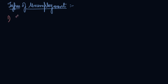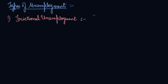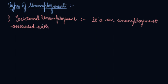Number one is Frictional Unemployment. What is Frictional Unemployment? It is an unemployment associated with the changing of jobs in a dynamic economy. Which means that if you have left your job and you are searching for a new job, there is some span of time that you remain unemployed. That is your Frictional Unemployment.